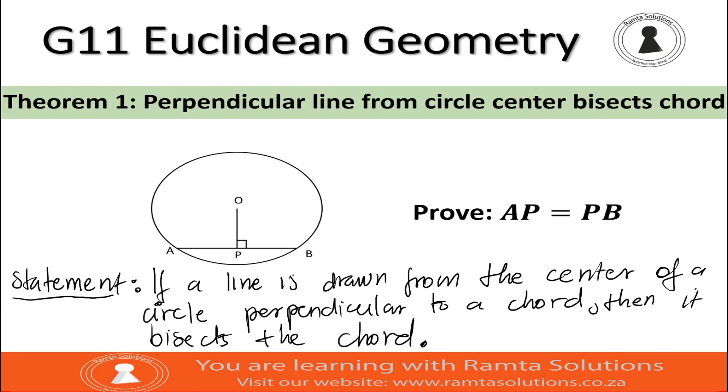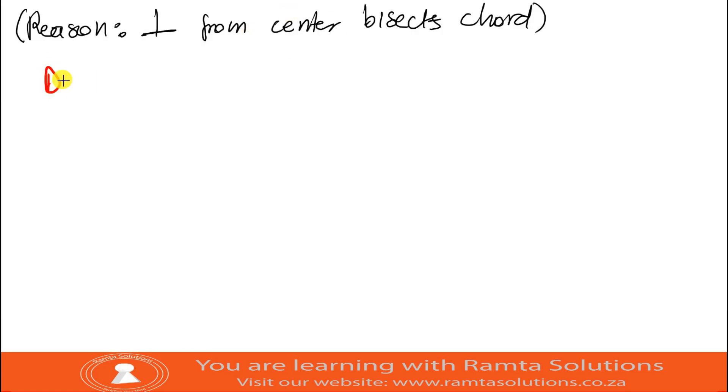Now, given the information here, if you want to prove that AP is equal to PB, what you need to do, first thing first, you're going to write these instructions. So you're going to say draw OA and OB.